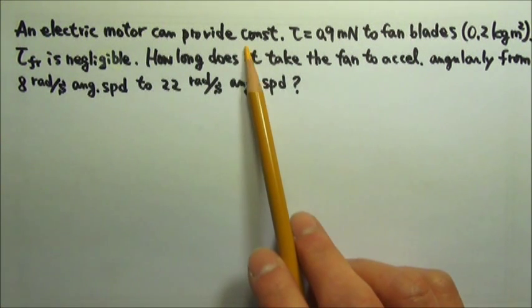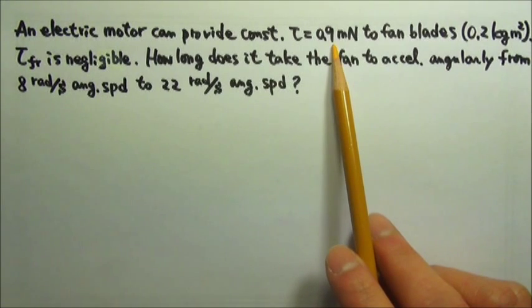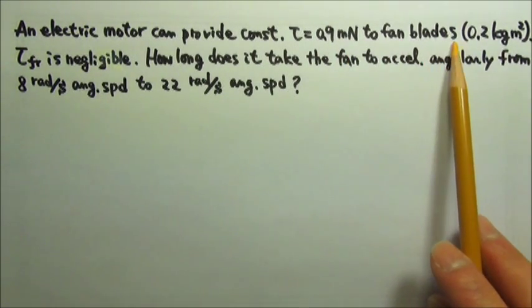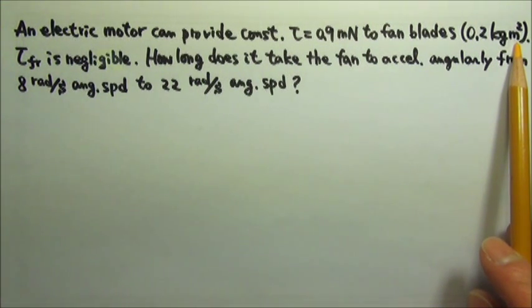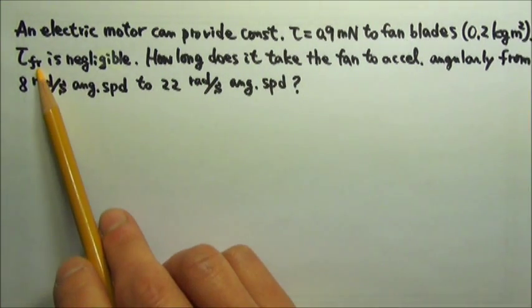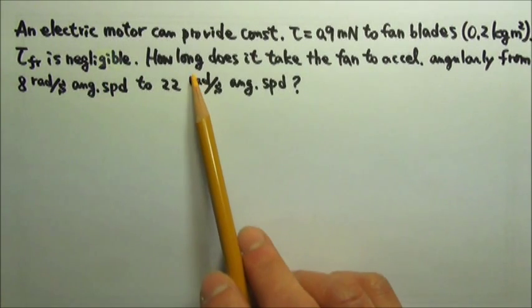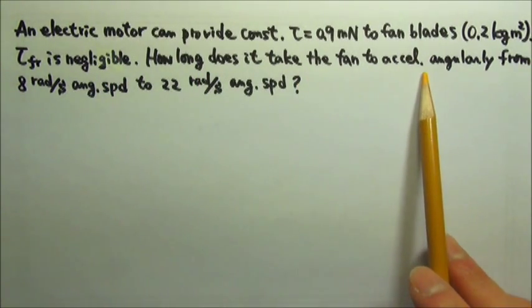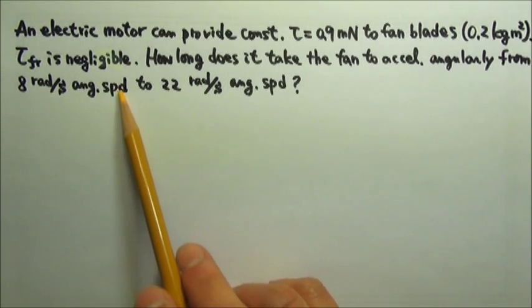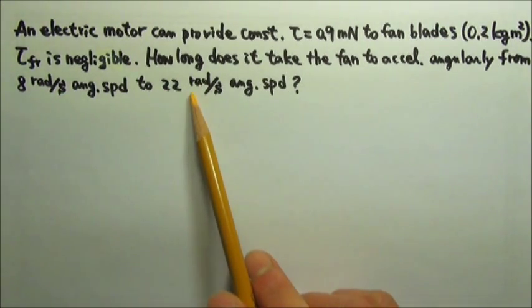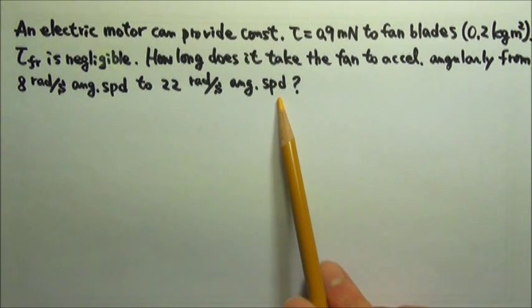An electric motor can provide a constant torque of 0.9 mN to fan blades with 0.2 kgm² of rotational inertia. If friction torque is negligible, how long does it take for the fan to accelerate angularly from a low setting of 8 radians per second angular speed to a high setting of 22 radians per second angular speed?